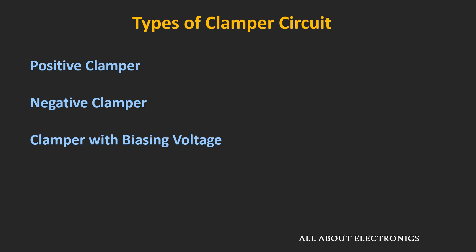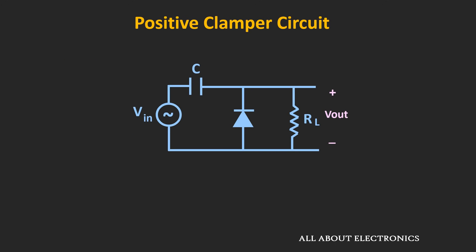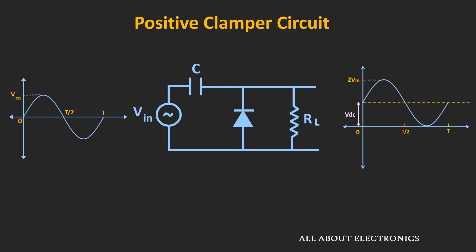First of all, let us talk about the positive clamper circuit. This circuit shown here is an example of the positive clamper circuit. Any type of waveform can be applied to this clamper circuit, but here we will analyze this circuit by applying a sine wave. So let's say a sine wave with a peak value of Vm is applied — at the output, this entire waveform will get shifted by a DC value of Vm.